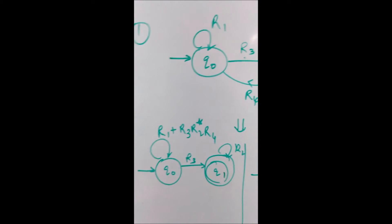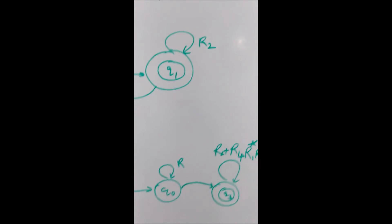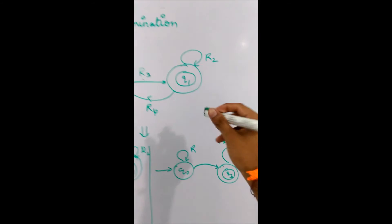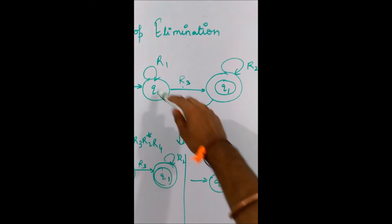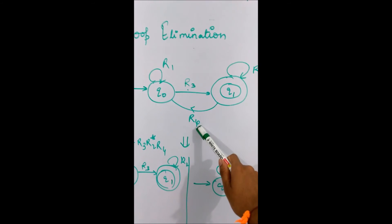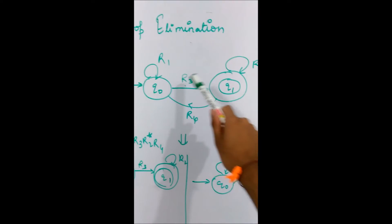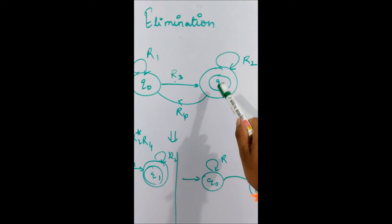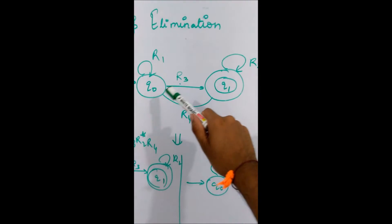We can also transfer the effect on the next state as well which is q1. In that case consider this state. There is a loop from this q1 state to q0 state which is r4 on q1. It goes to q0 then again it comes to q1 on r3. In this way it is making a loop like r4 then r1, r3.